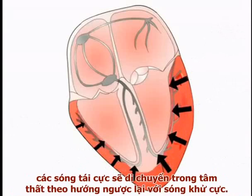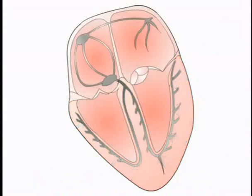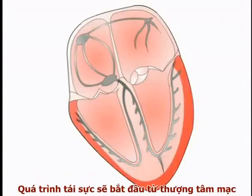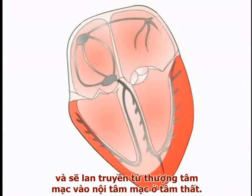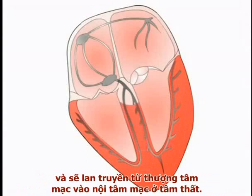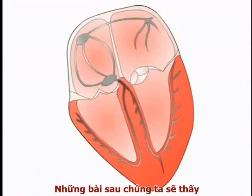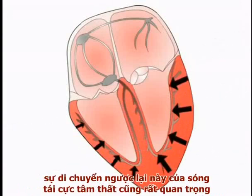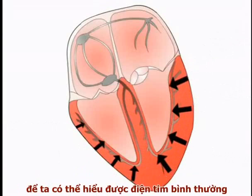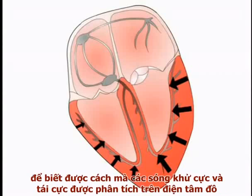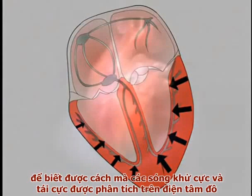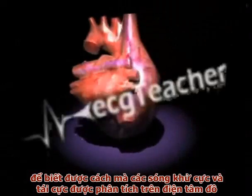Therefore, perhaps counterintuitively, repolarization spreads through the ventricles in the opposite direction to the depolarization wave. As illustrated here, repolarization begins in the epicardium and then spreads backwards from the epicardial to the endocardial surface of the ventricles. This retrograde spread of ventricular repolarization is important in understanding the normal ECG readout. We will now go on in video two to show how the depolarization and repolarization waves are analyzed to produce the normal ECG readout.